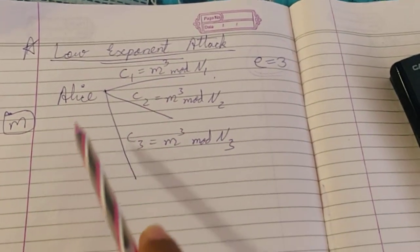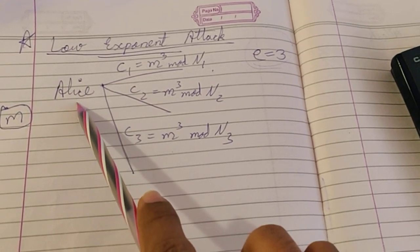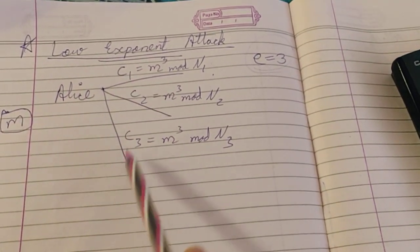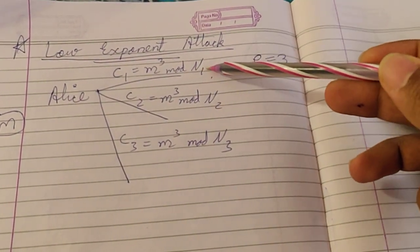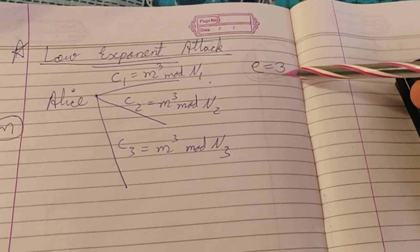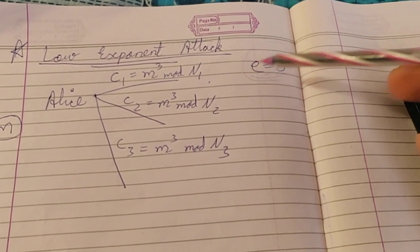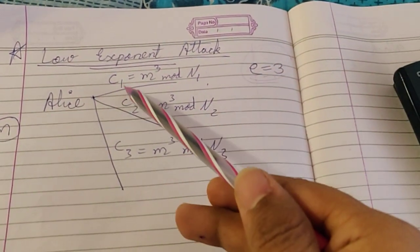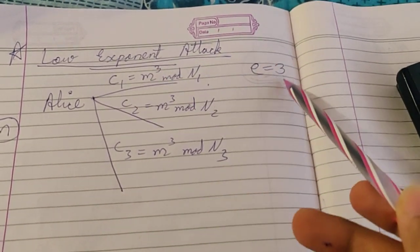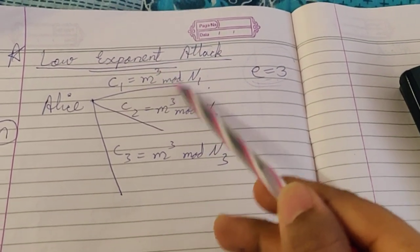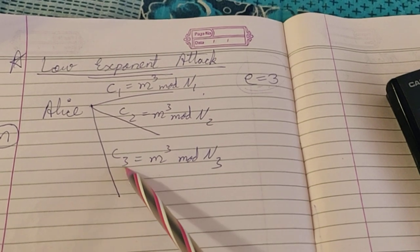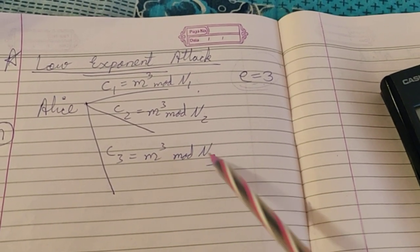Suppose there is a person named Alice who wants to send the same message m to three persons using public keys n1, n2, and n3, with a very low public exponent e equals 3. When we encrypt the message, we get: c1 = m³ mod n1, c2 = m³ mod n2, and c3 = m³ mod n3.